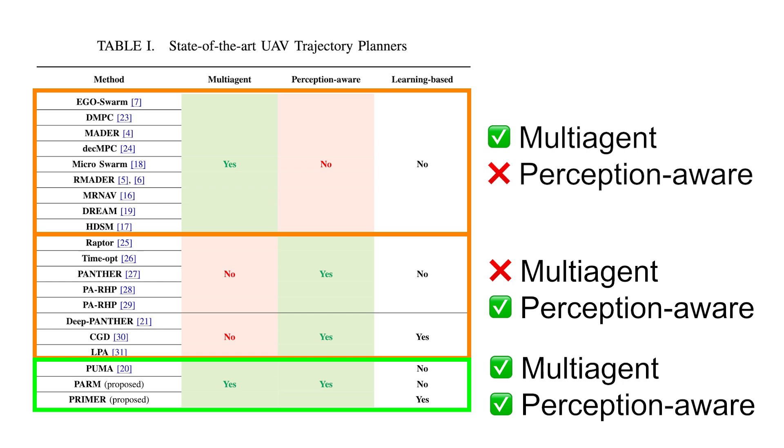Our previous work, Puma, is one of the first that is both multi-agent and perception-aware. However, like PARM and PARMSTAR, Puma is optimization-based and suffers from high computational burden.